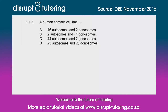A human somatic cell has: A) 46 autosomes and 2 gonosomes, B) 2 autosomes and 44 gonosomes, C) 44 autosomes and 2 gonosomes, or D) 23 autosomes and 23 gonosomes. Now the important thing to remember is that humans have...